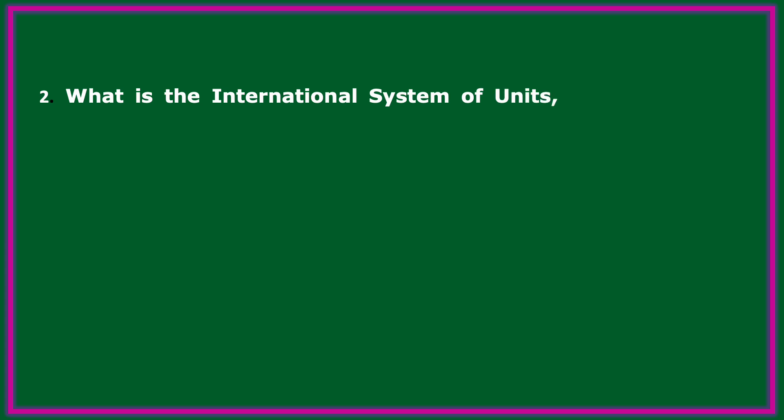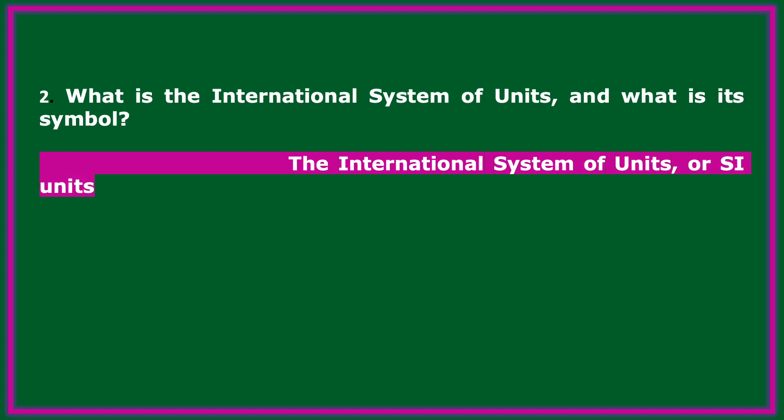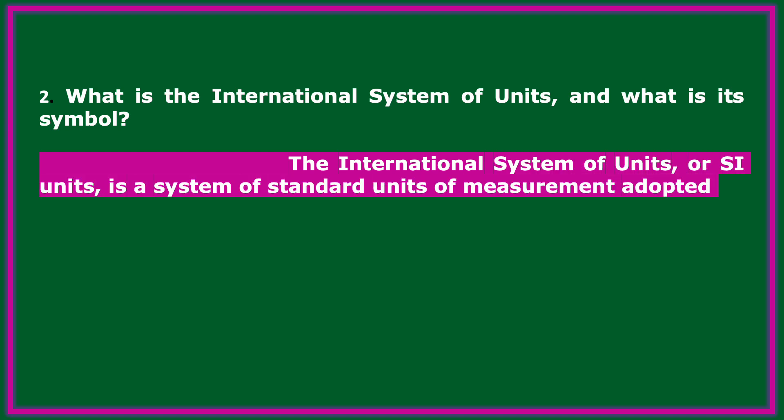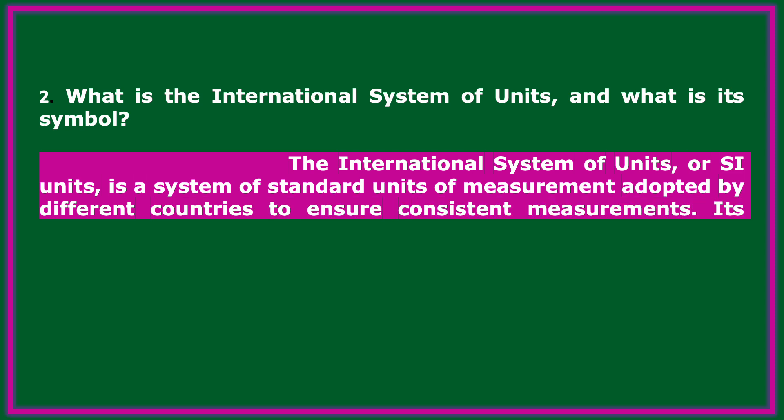What is the International System of Units and what is its symbol? The International System of Units, or SI Units, is a system of standard units of measurement adopted by different countries to ensure consistent measurements. Its symbol is SI. SI units are standard units used all over the world, making measurements clear, uniform, and easy to compare. For example, the SI unit of length is the meter.